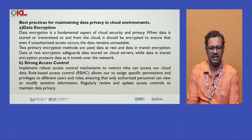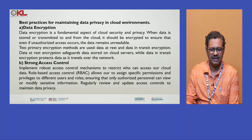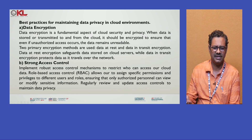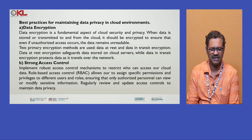What are the best practices for maintaining data privacy in the cloud? First is data encryption — we use two types of techniques: data at rest encryption and data in transit encryption. Data at rest encryption safeguards data stored in cloud servers. Data in transit encryption protects data as it travels over the network. To provide data security while data is traveling in the network, we use data in transit encryption.